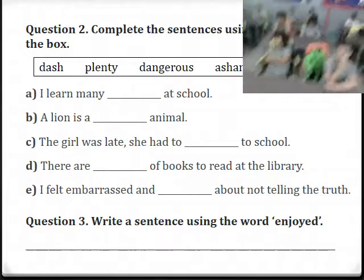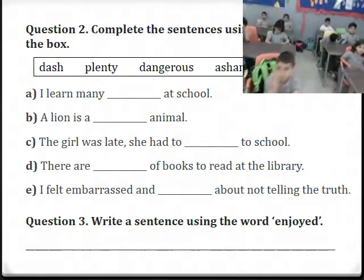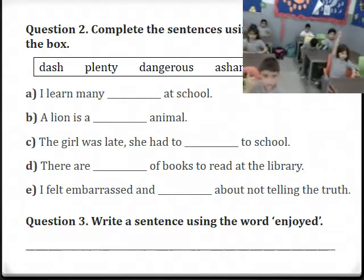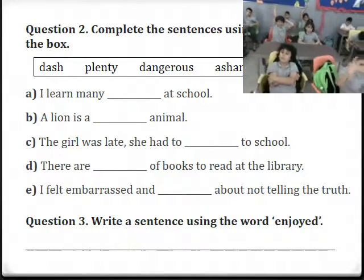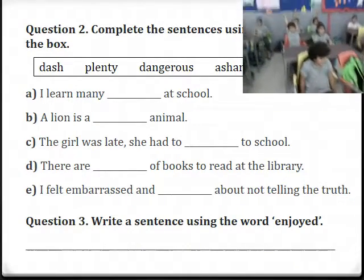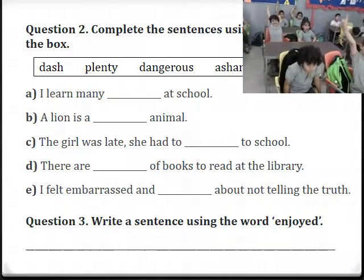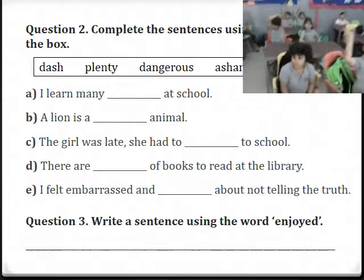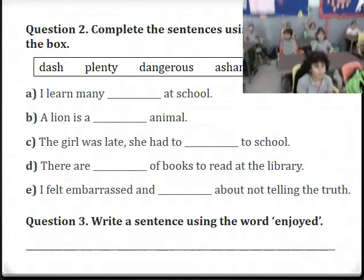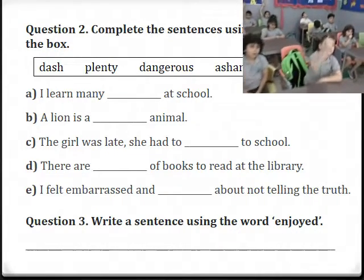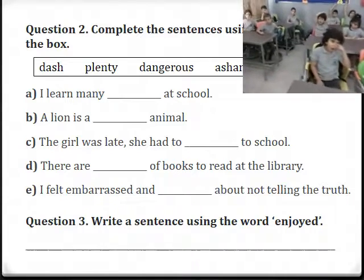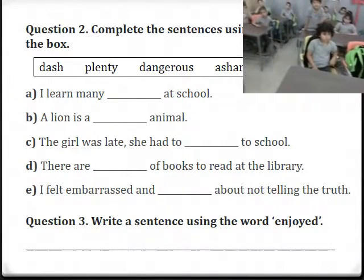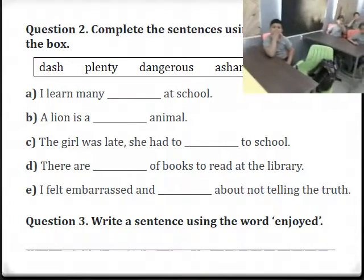Question two. Complete the sentences using the words in the box. We took all these words in class before. The first word is 'dash' — meaning run quickly or move quickly. 'Plenty.' 'Dangerous' — something that causes harm.